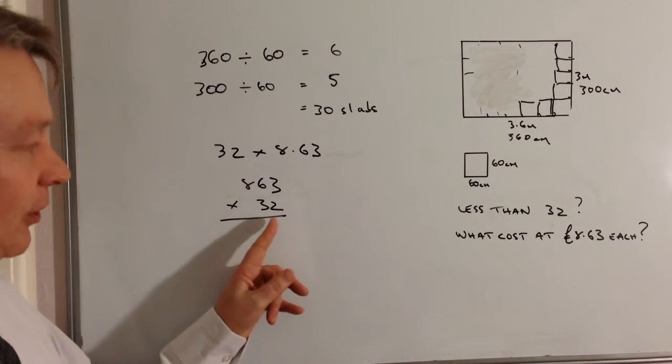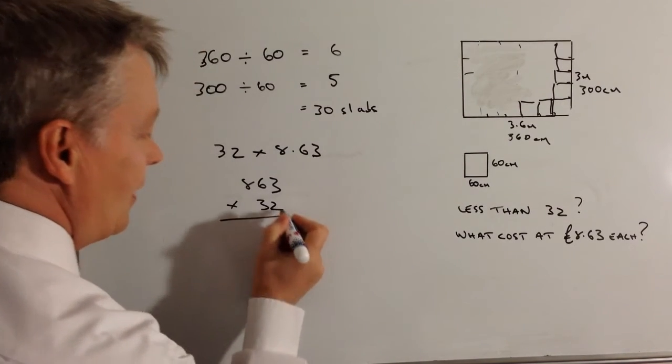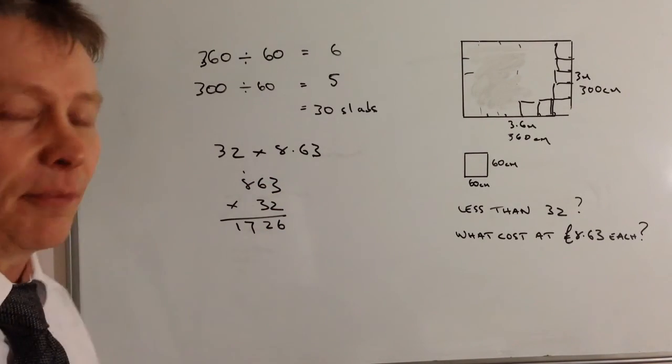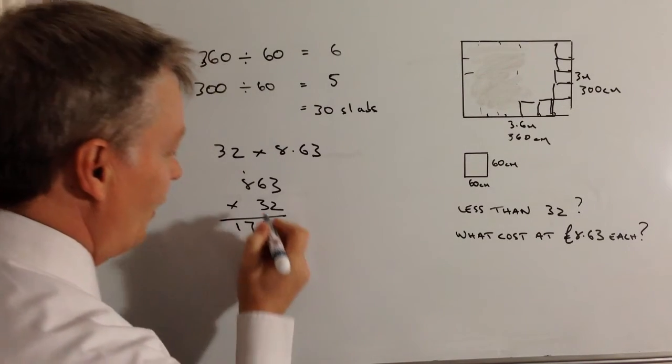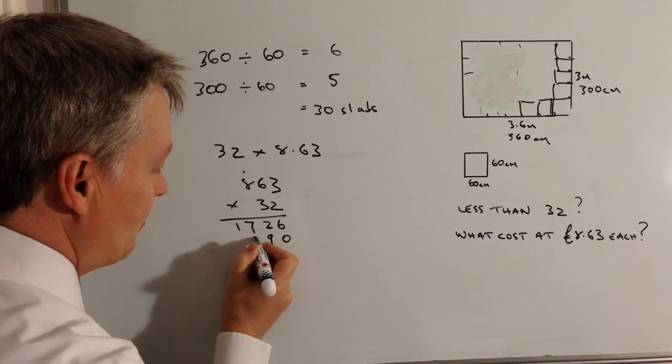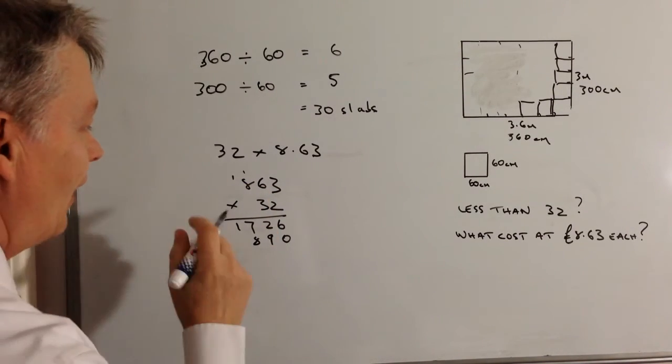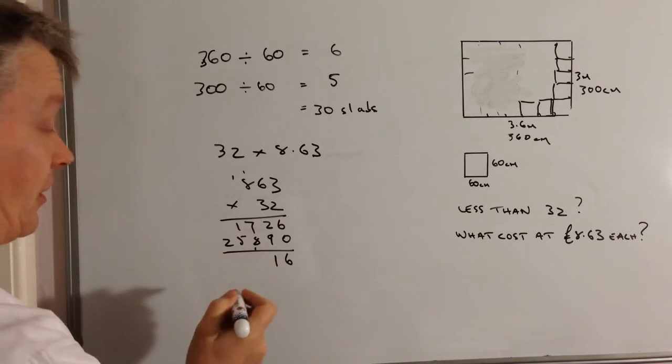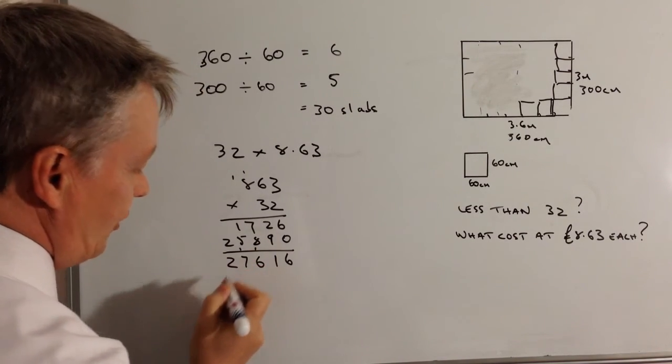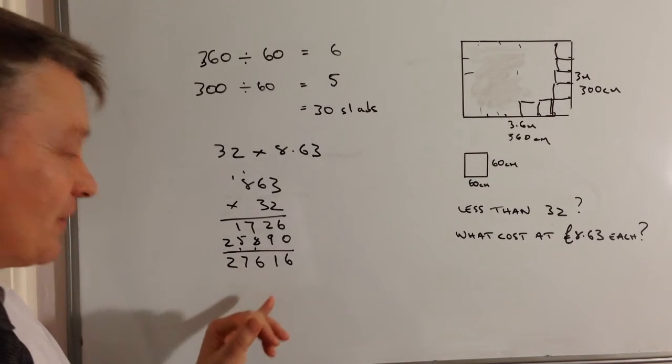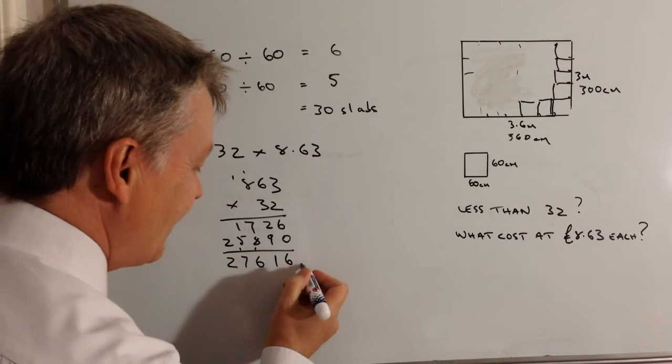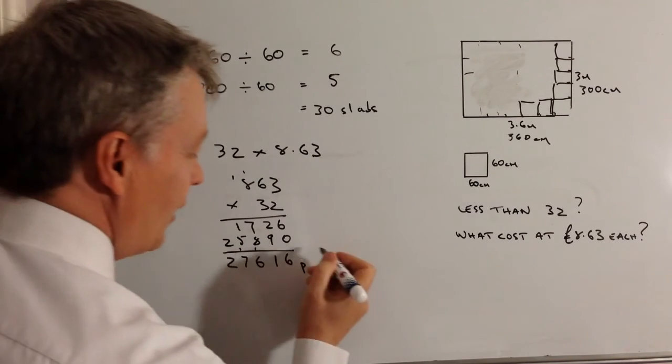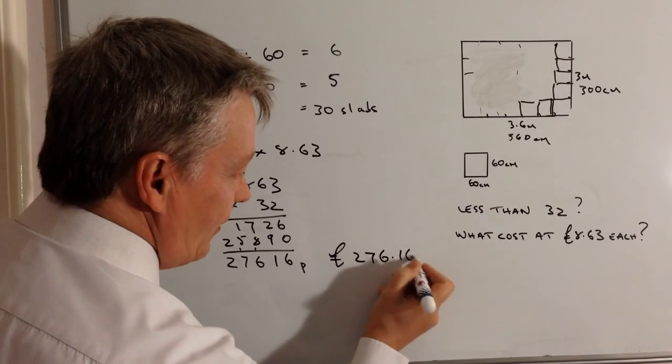So the way I would do that is I would look at the units first. I've got 2 times 3 is 6, 2 times 6 is 12, 2 there and carry the 1, 2 times 8 is 16 plus 1 is 17. Now I appreciate not everybody will do it in this particular way, but this is the way that I do it and I believe now it's becoming a little bit more popular as a method. Okay I just need to finish this off. So in other words this is going to be 27,616 pennies and I'm going to convert that to pounds. So the total cost for the 32 slabs at £8.63 each is going to be £276.16.